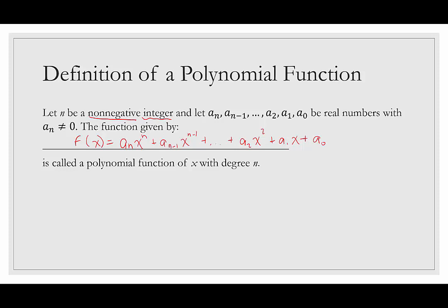That's what a polynomial function of x with degree n looks like. These look scarier than they are — the coefficients a sub n, a sub n minus one, and so on are just numbers, real numbers. It could be seven, it could be one half, it could be negative thirty-three. And x is our variable.